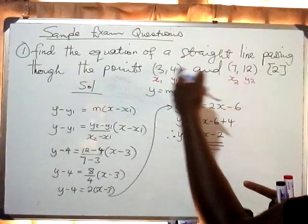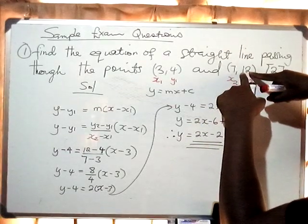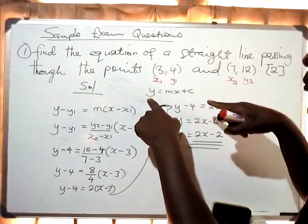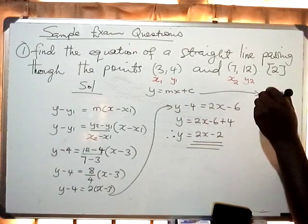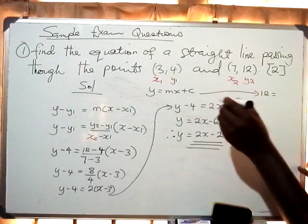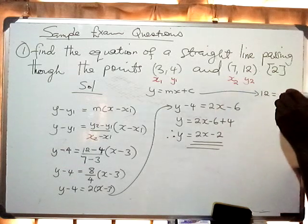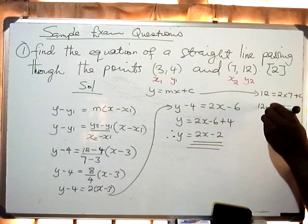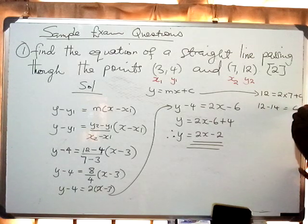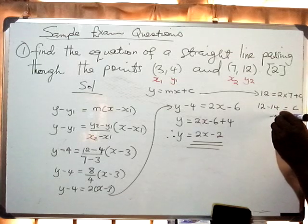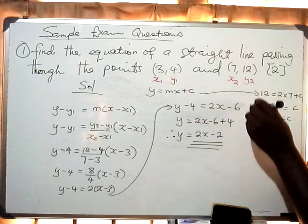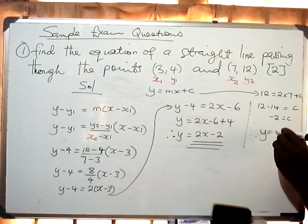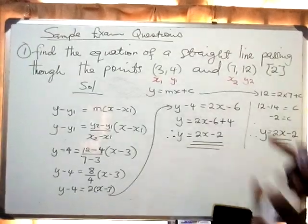Then you choose any of the two given points. If we chose the point where y is 12 and x is 7, we say 12 equals 2 times 7 plus c. So 12 equals 14 plus c, meaning 12 minus 14 equals c. The answer is negative 2, so c is negative 2. Therefore y equals 2x minus 2, which is exactly what we found before.